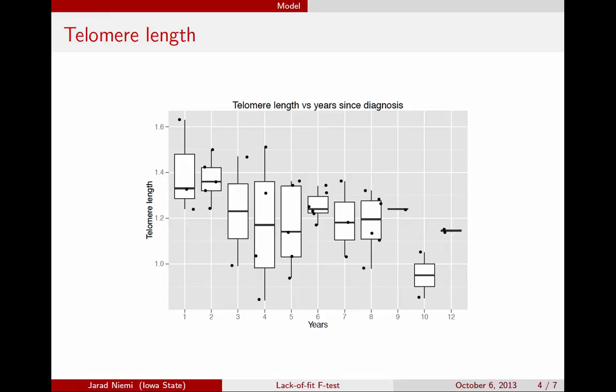We can think about this as being an ANOVA model, and that's what's pictured here using these box plots, where we have three individuals who've all been diagnosed one year out, five individuals here that are two years out, two individuals that are three years out, and so forth. So we have multiple observations per explanatory variable value. And again, these points have been jittered here, just so that they don't lie on top of each other. But our actual data says that these three observations had exactly one year since their diagnosis.